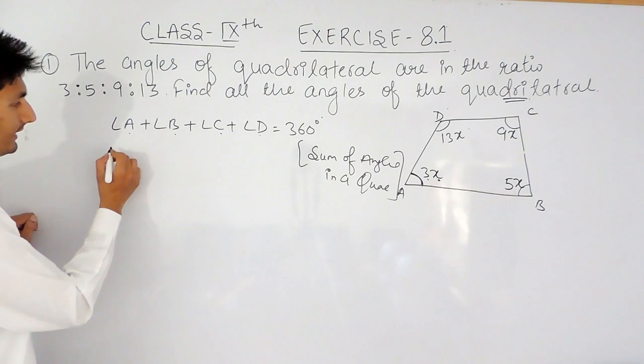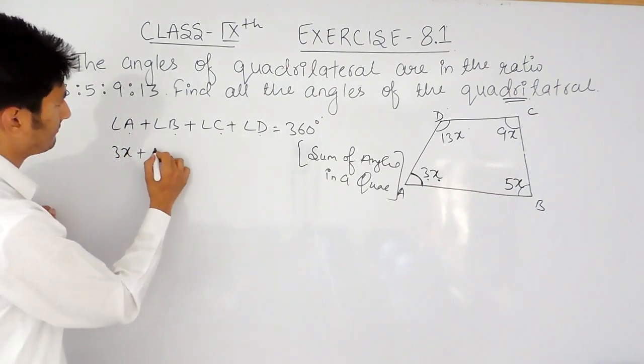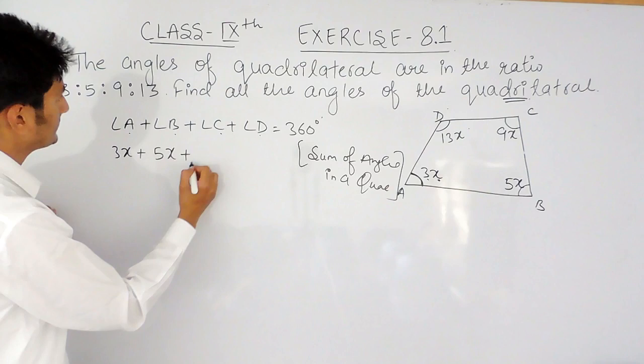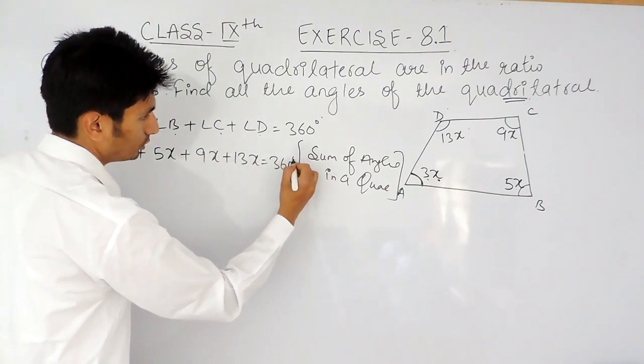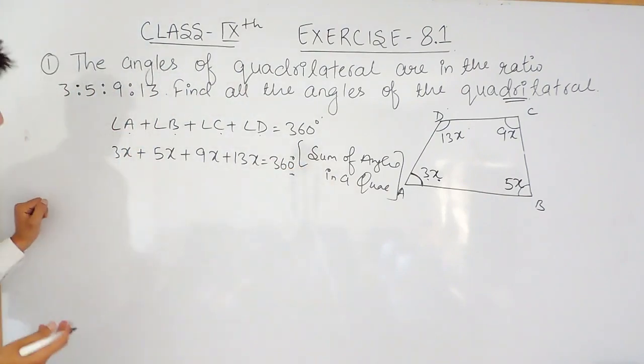Now, angle A is 3x, B is 5x, C is 9x and D is 13x and that is equal to 360 degrees.